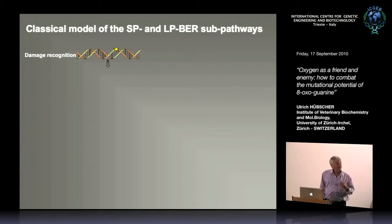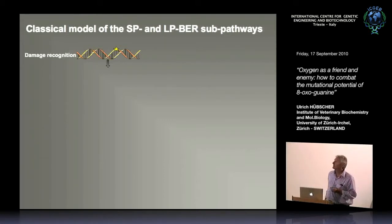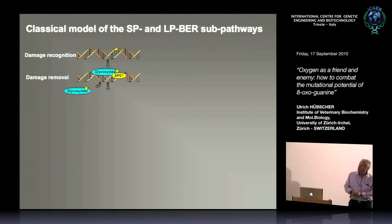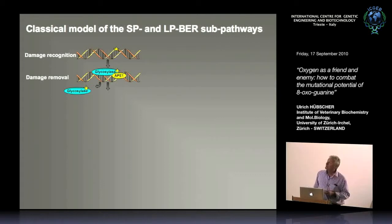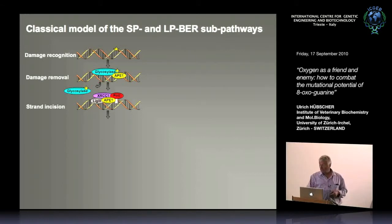Damage recognition is a huge task — recognizing 20,000 to 30,000 damages every day in every cell requires a large machinery, because if you don't recognize a mistake you can't repair it, just like a dentist is useless if he doesn't find the hole in your tooth. The enzymes called glycosylases recognize the damage, flip the base out, and cut it, leaving a hole that is recognized by AP endonuclease 1.